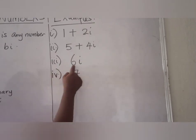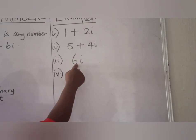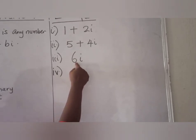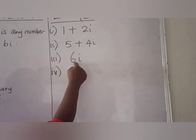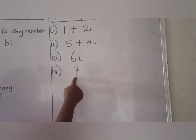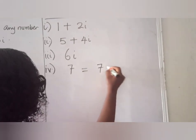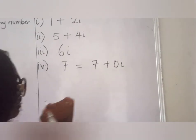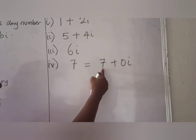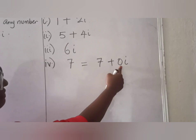In the third example, we have 6I. 6 is the imaginary part, while the real part of the complex number is 0. In the fourth example, we have 7. The number 7 can be written as 7 plus 0I. This means that 7 is the real part, while 0 is the imaginary part.